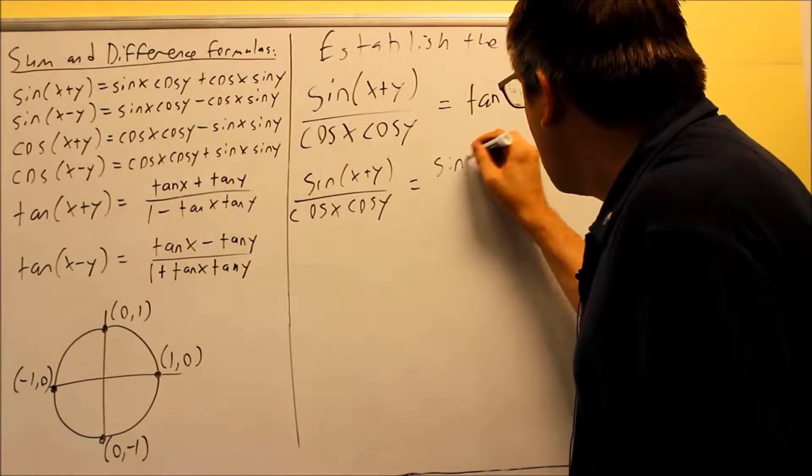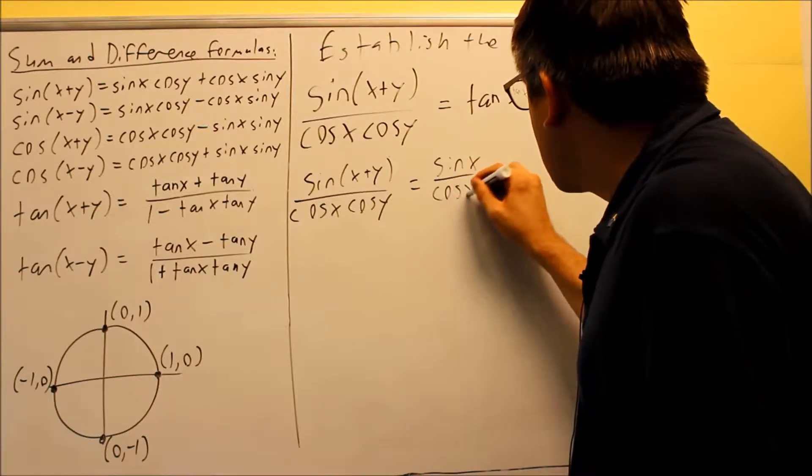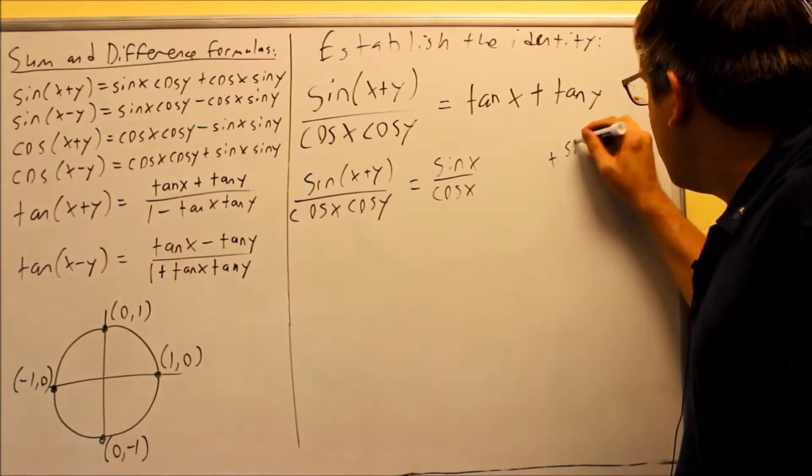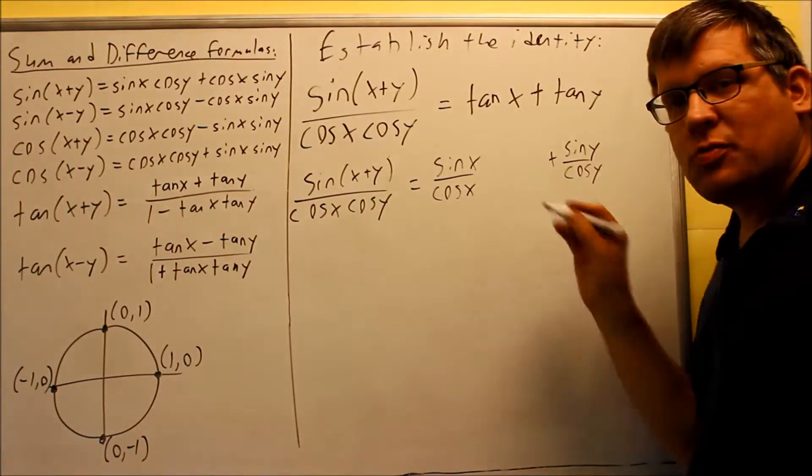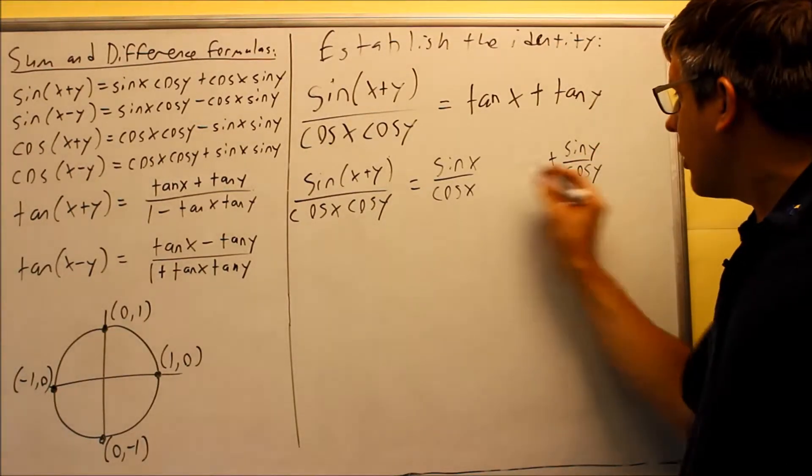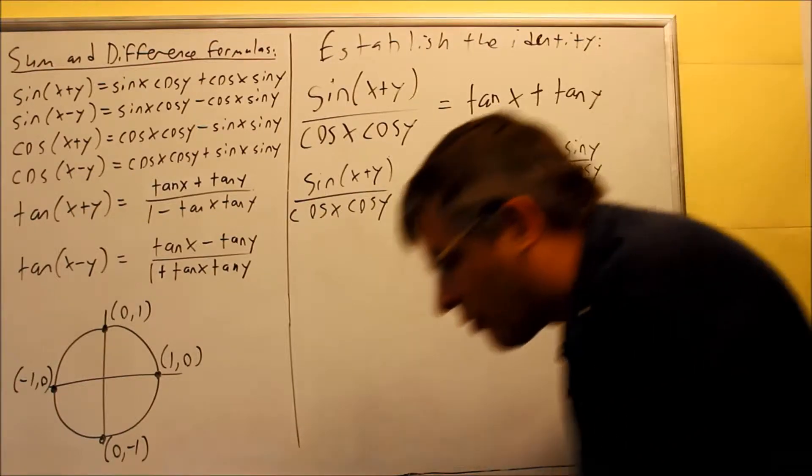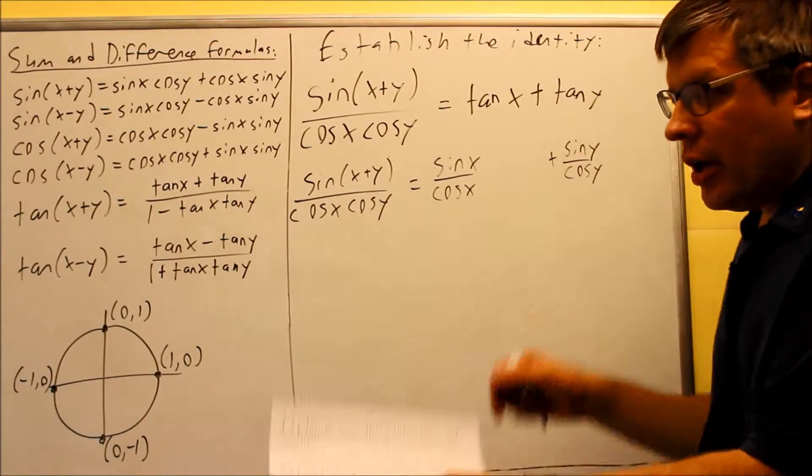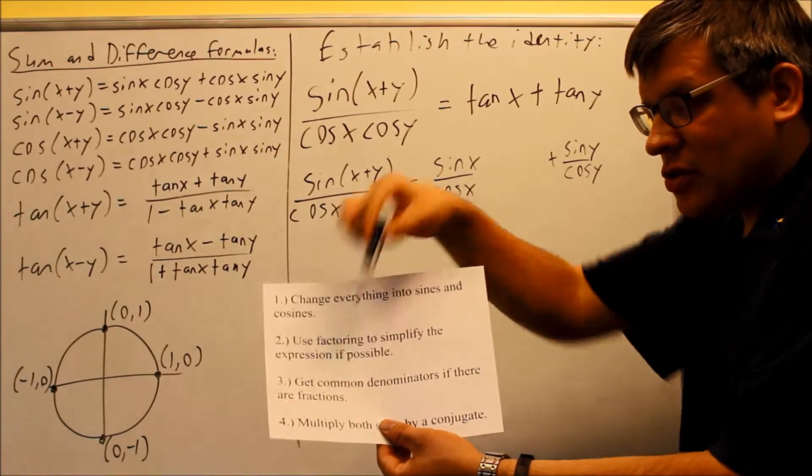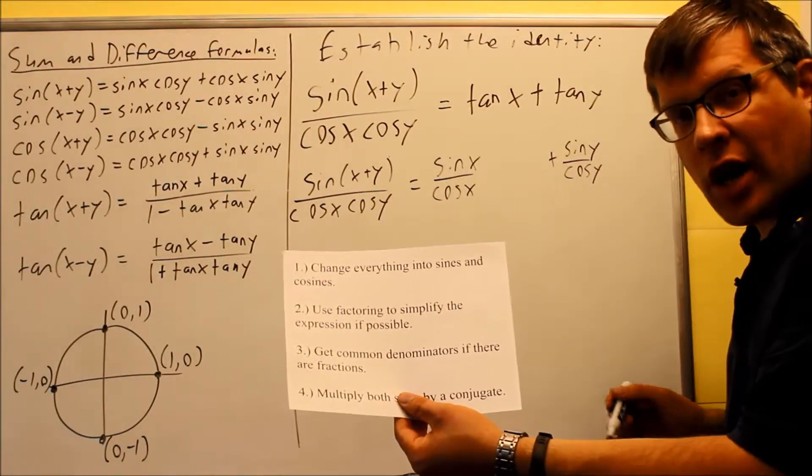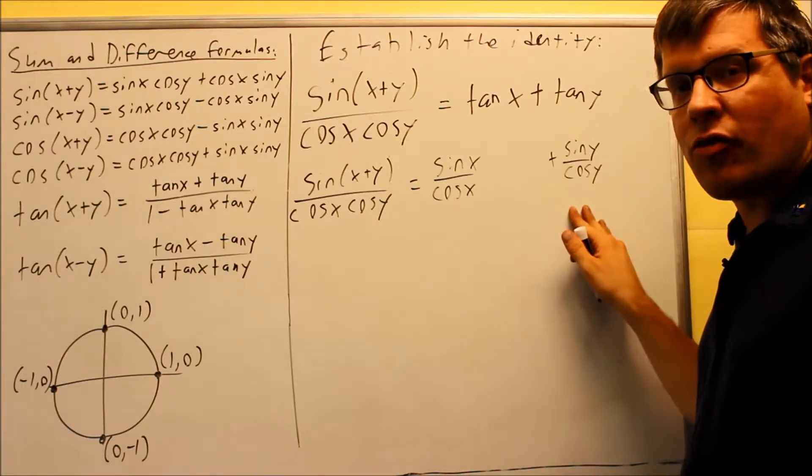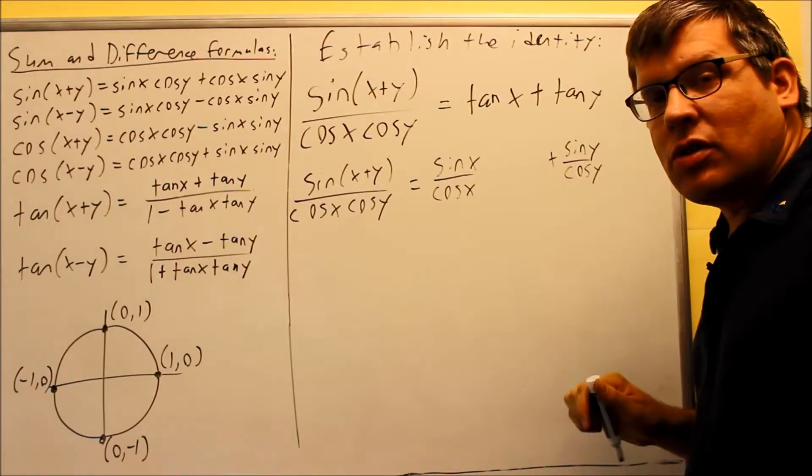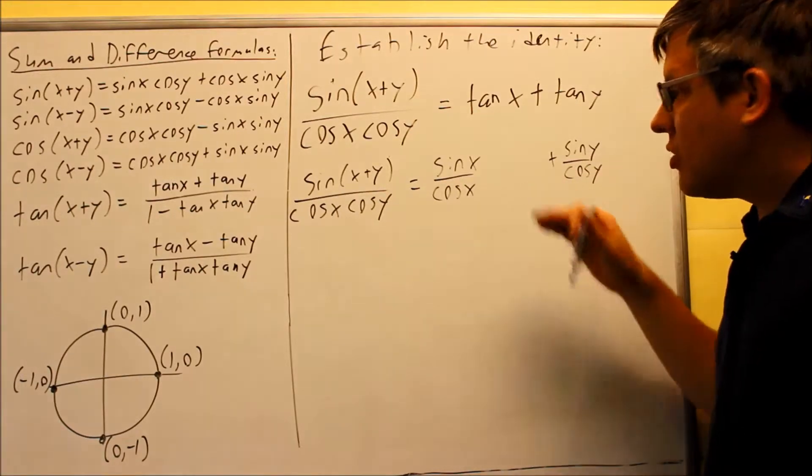And over here, I'm going to do sine y over cosine y. The reason why I'm leaving a space in here is because I noticed that now I have two separate fractions. And one of the other strategies on this paper says get common denominators if they're a fraction. So that's going to be my other strategy that I'm going to do here. So since I recognize that I already have a fraction, then I'm definitely going to have to get common denominators to continue with the problem.